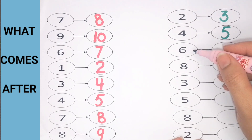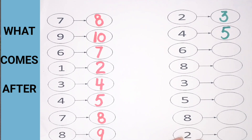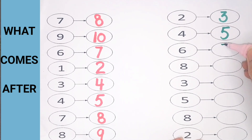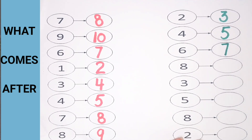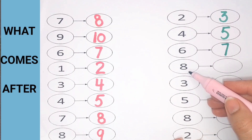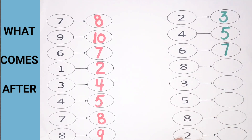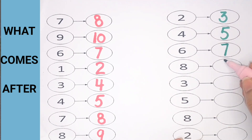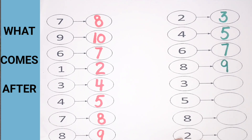Next is number 6. What comes after 6? 7 — number 7. What comes after 8? 8 — 9. Number 9.